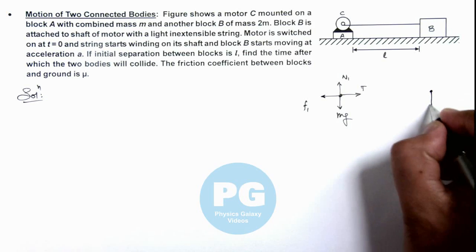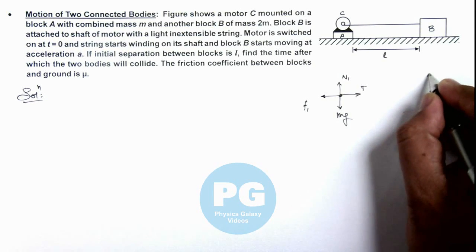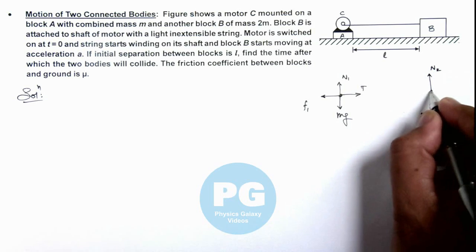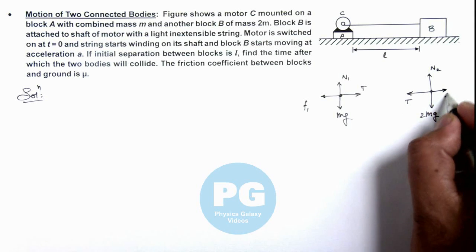Block B, its weight 2mg will act in downward direction, normal reaction N2 upward, and tension toward left and on right side its friction will be μ multiplied by 2mg.